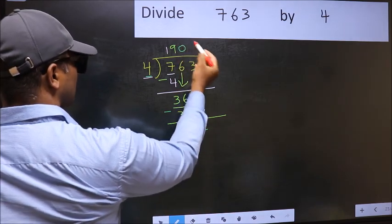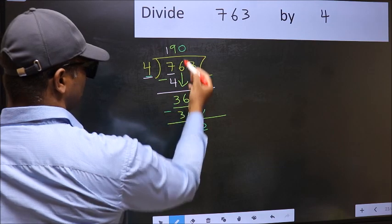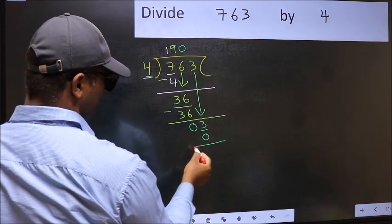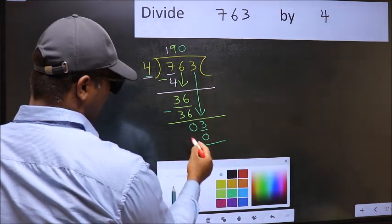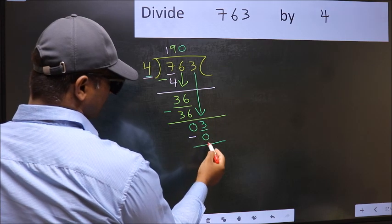So 4 into 0, 0. Now you should subtract. 3 minus 0, 3.